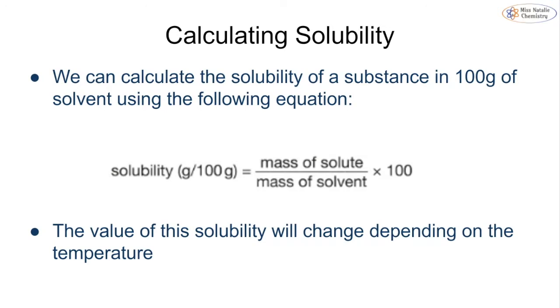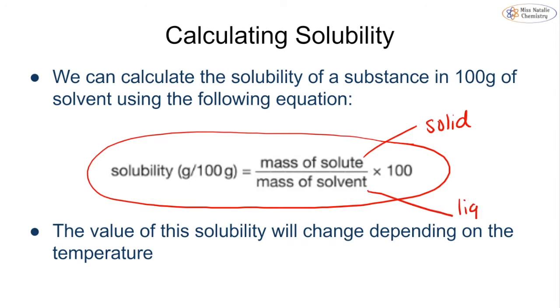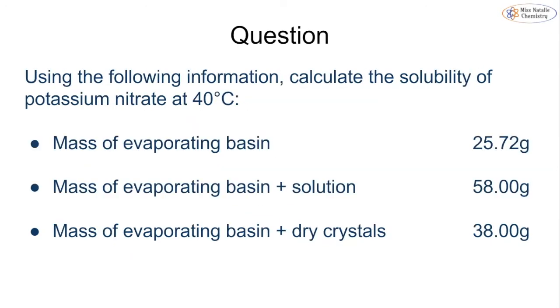We can calculate the solubility of a substance. Anytime we can put a number to something we can do a calculation. We use the following equation: solubility in grams per 100g equals mass of solute divided by mass of solvent times 100, because we are looking at 100 grams. This value for solubility will change depending on the temperature.